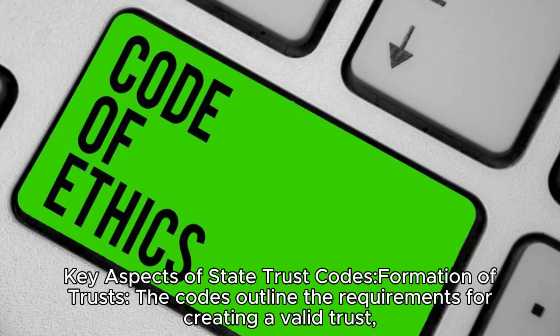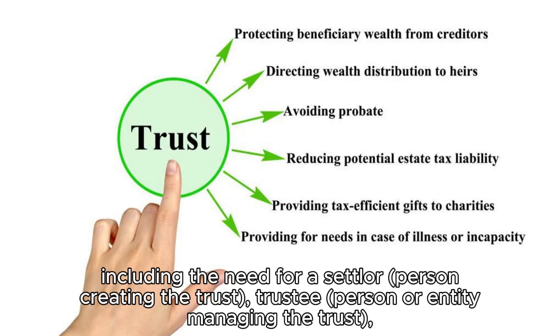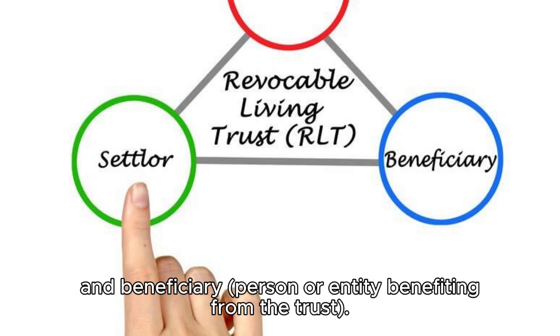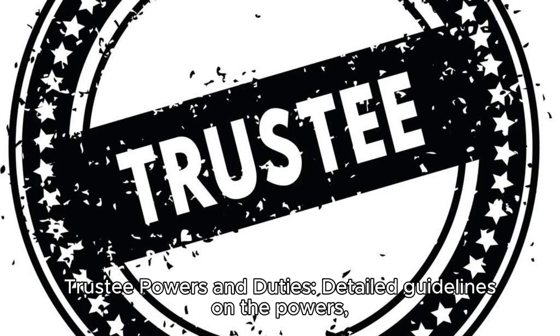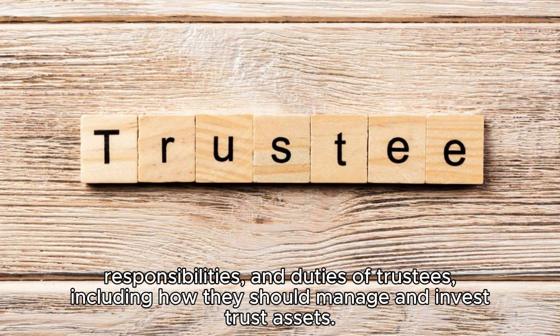Key aspects of state trust codes — formation of trusts: the codes outline the requirements for creating a valid trust, including the need for a settlor (person creating the trust), a trustee (person or entity managing the trust), and a beneficiary (person or entity benefiting from the trust).